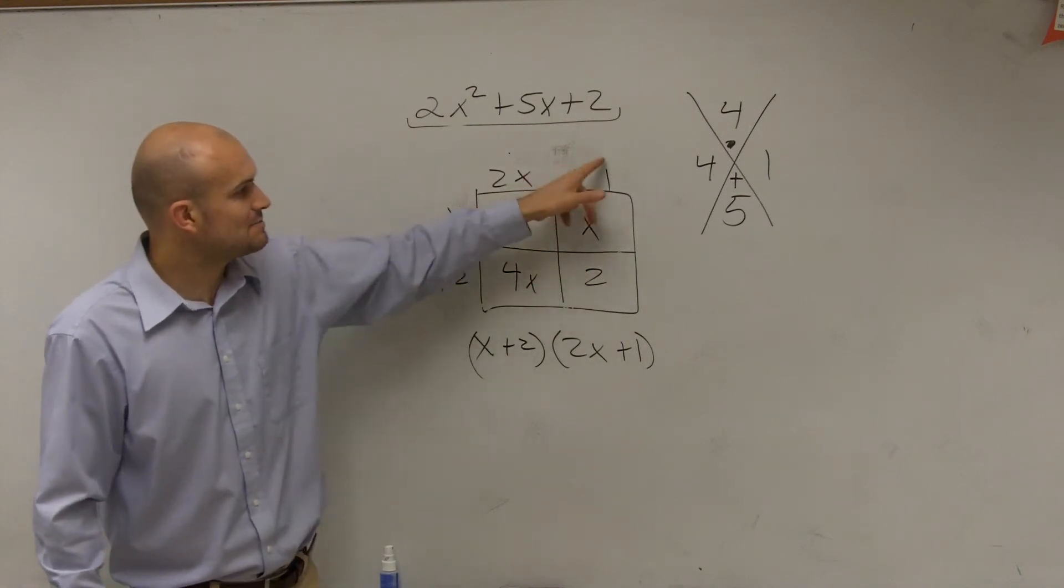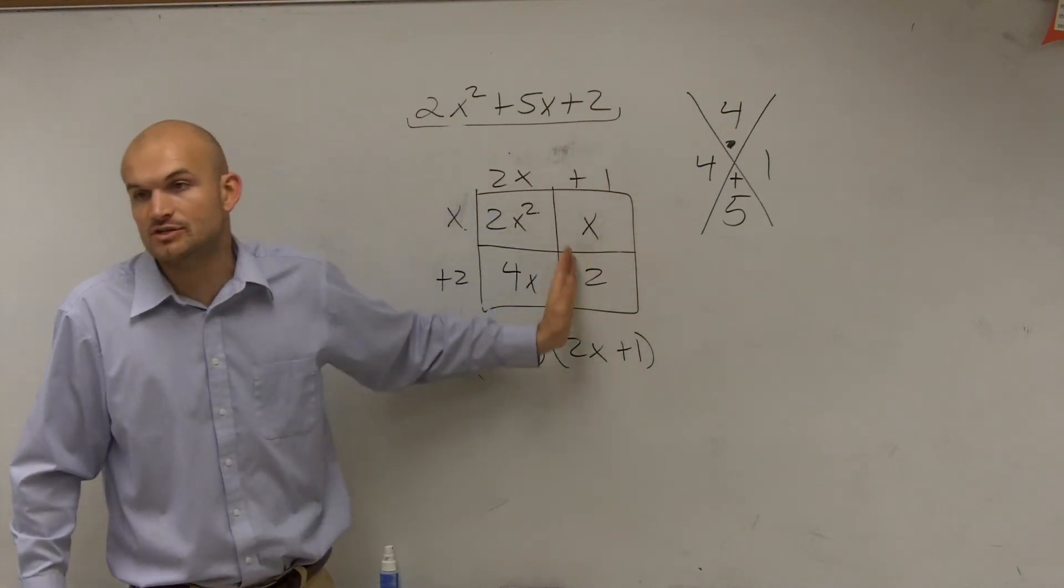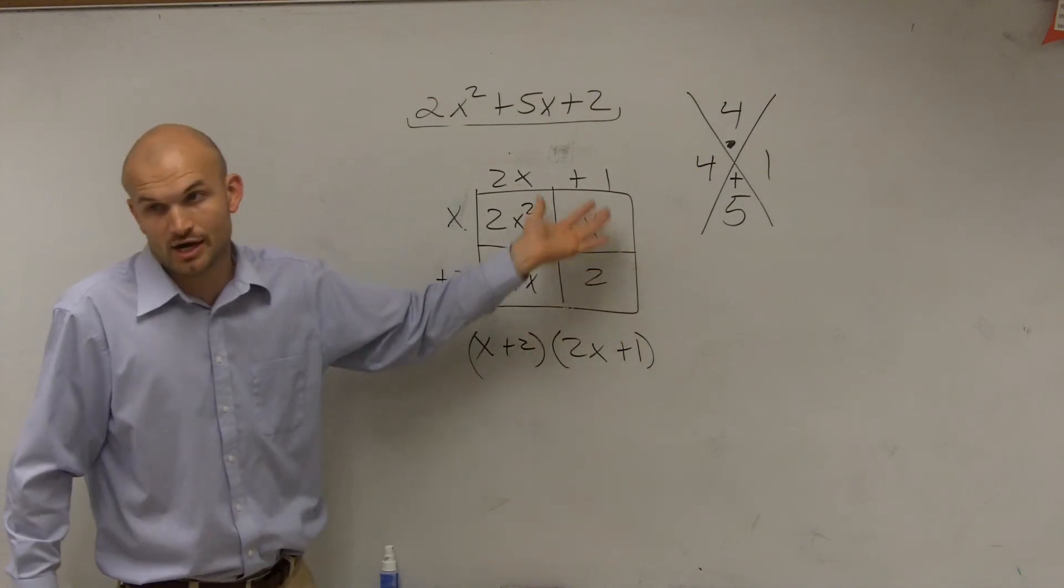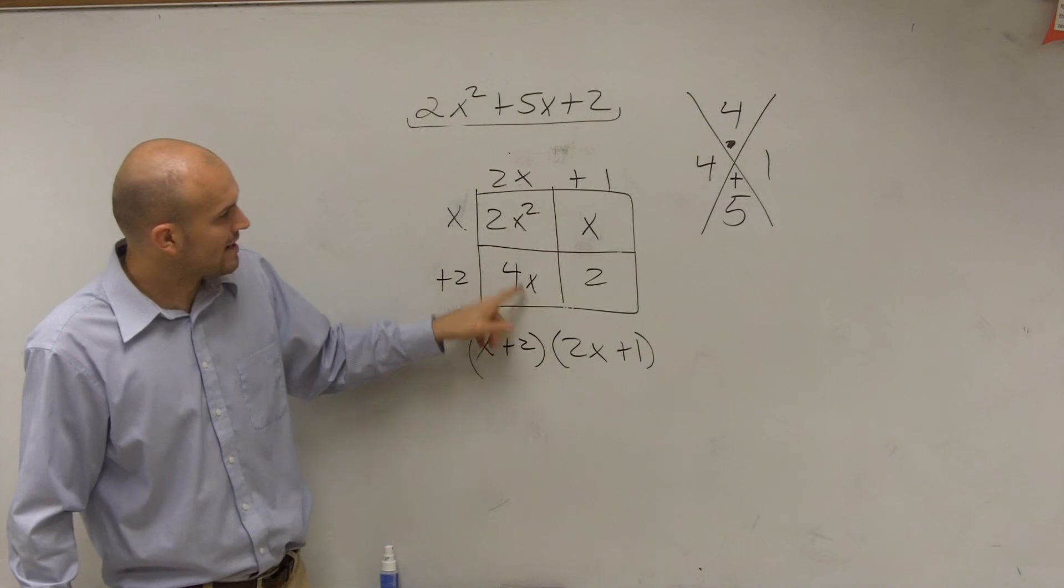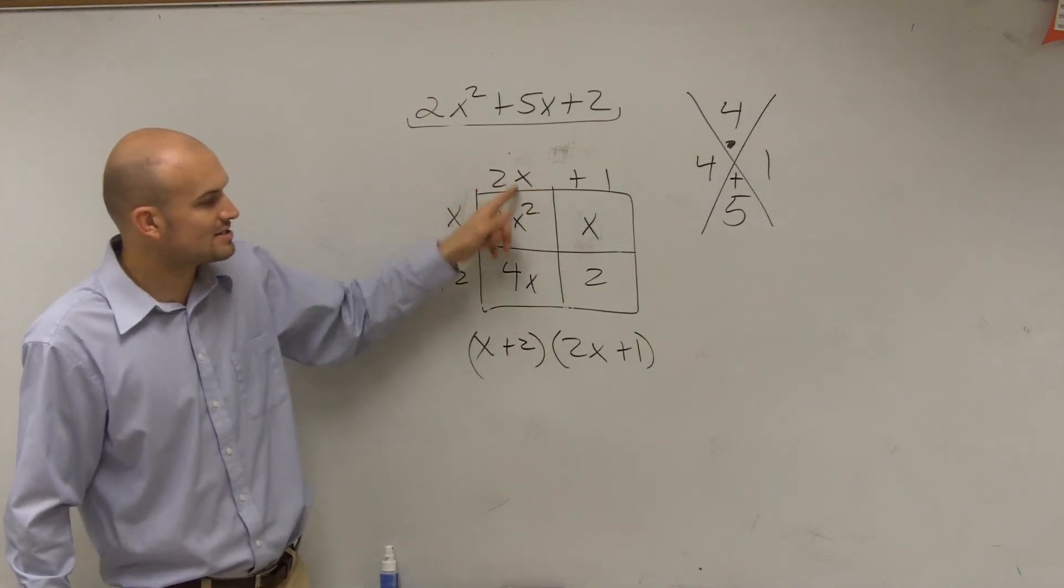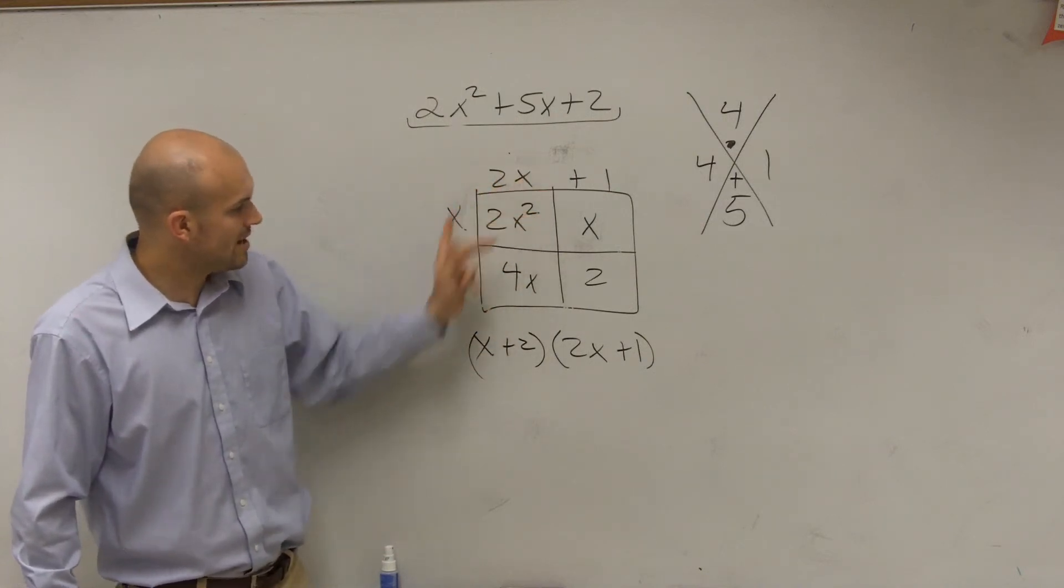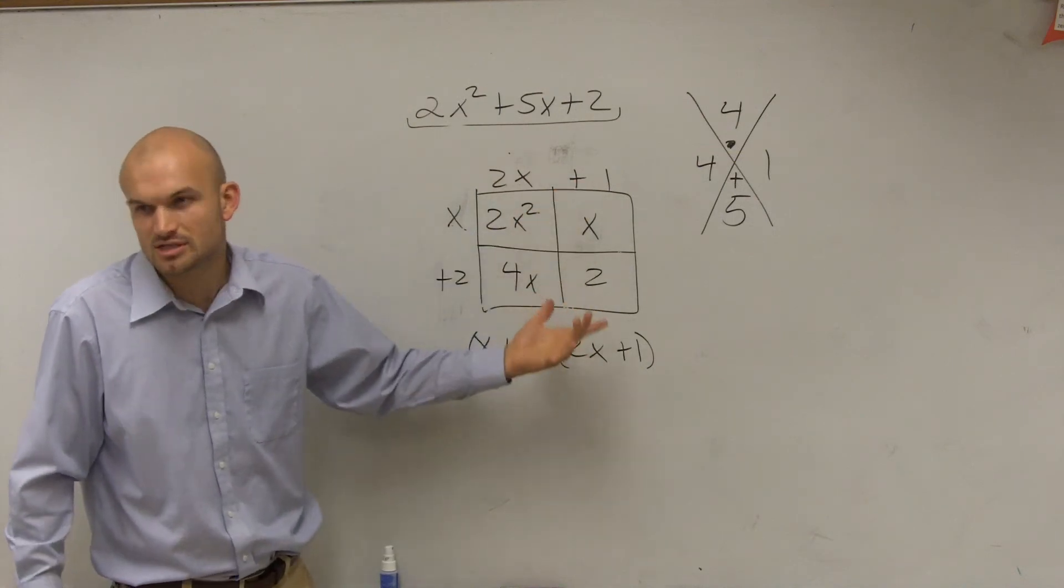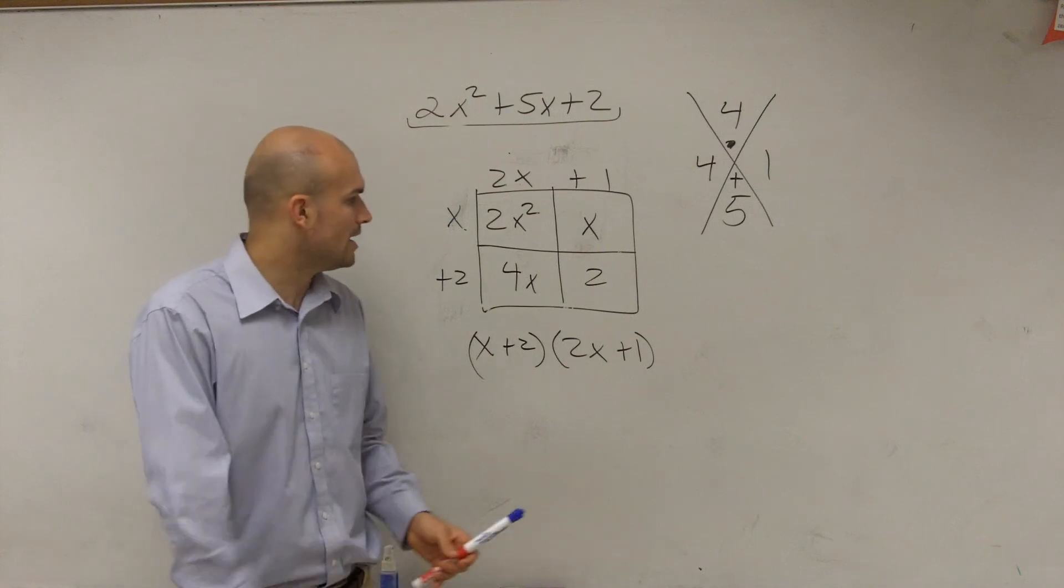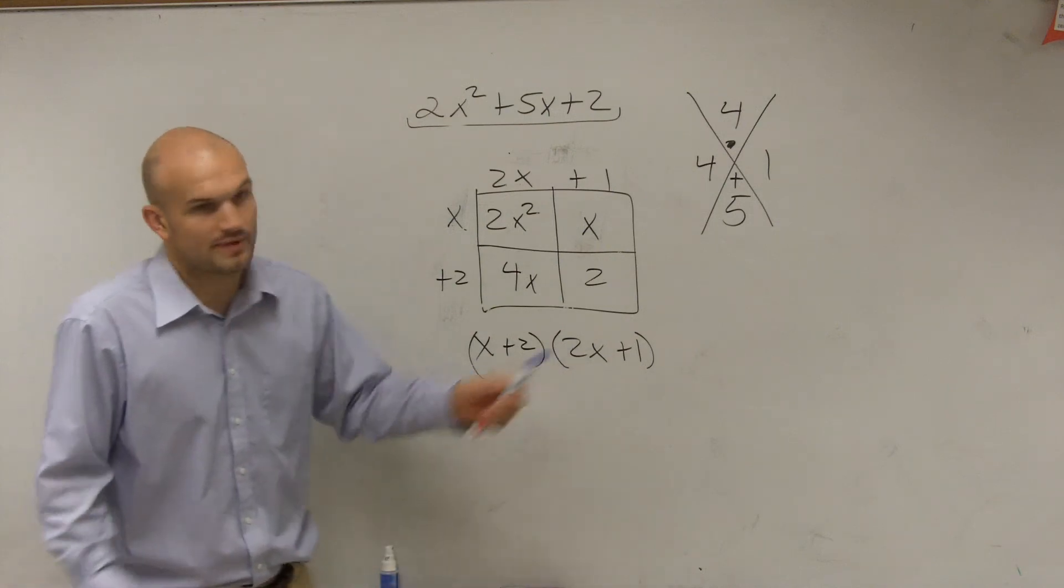x times 1 gives you x. I'm trying to find the area of each one. I'm giving you the area and trying to find the side lengths for each area. So this area is 4x. If I know one length is 2x, what does the other length have to be? 2, because 2x times 2 gives you 4x. And then 2 times 1 gives you 2. Does that make sense? Okay. And so, there you go. There's your answer.